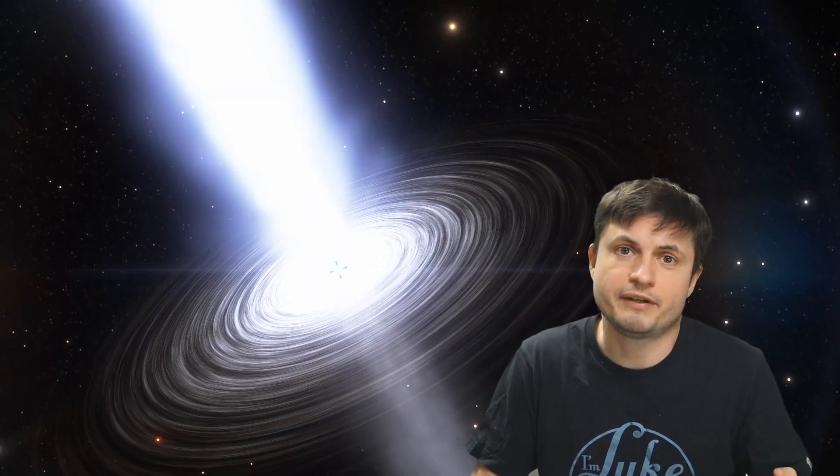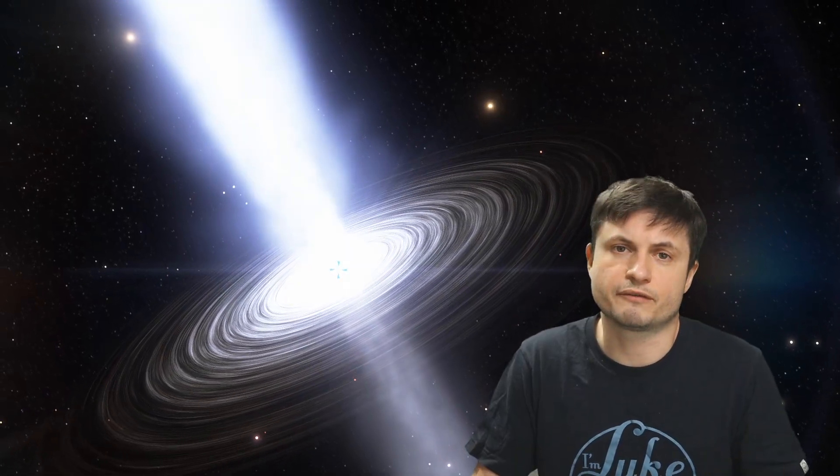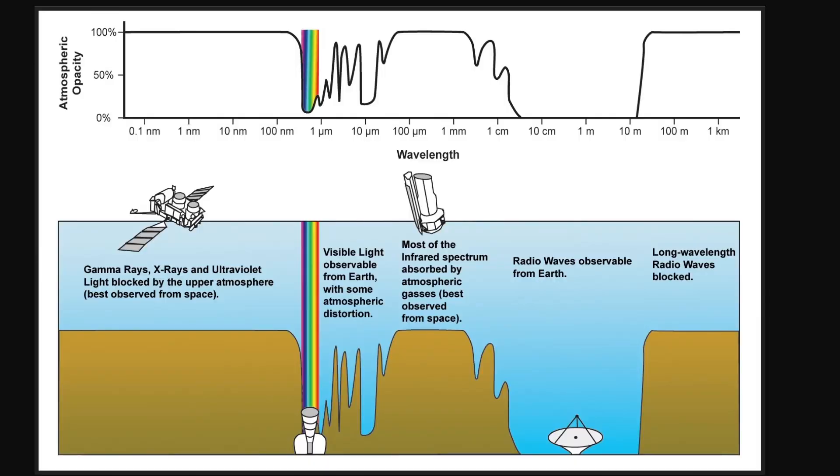But generally the accretion disks of black holes are able to produce a lot of different frequencies. And because of this the scientists had to focus on one frequency that they know would not have any interference and would be sort of visible through the atmosphere of planet earth. A lot of frequencies like for example ultraviolet frequencies get absorbed by earth. For example in this image from NASA we can kind of see the what's known as atmospheric opacity or essentially which frequencies can usually go through the atmosphere.